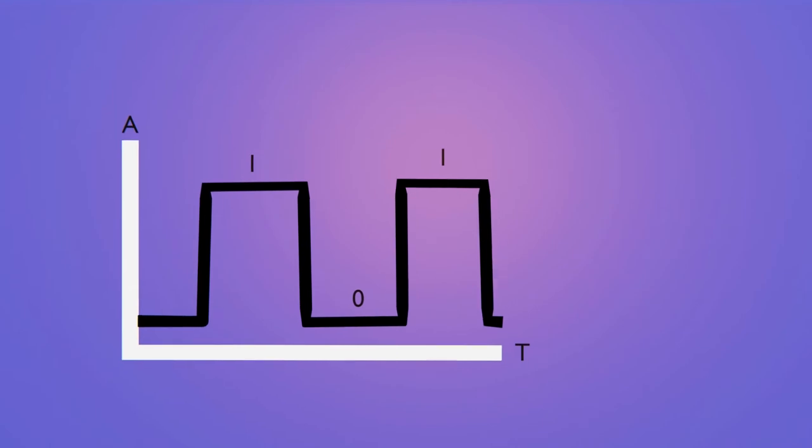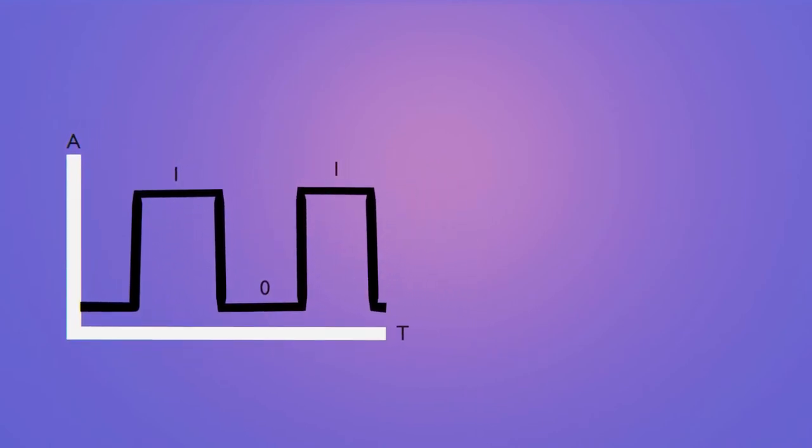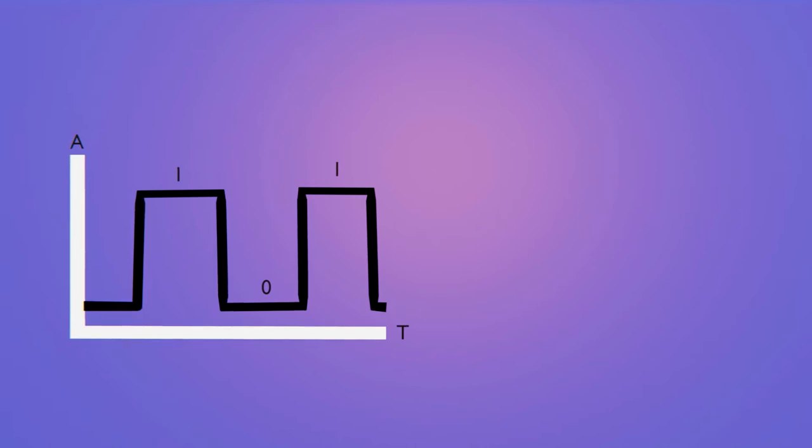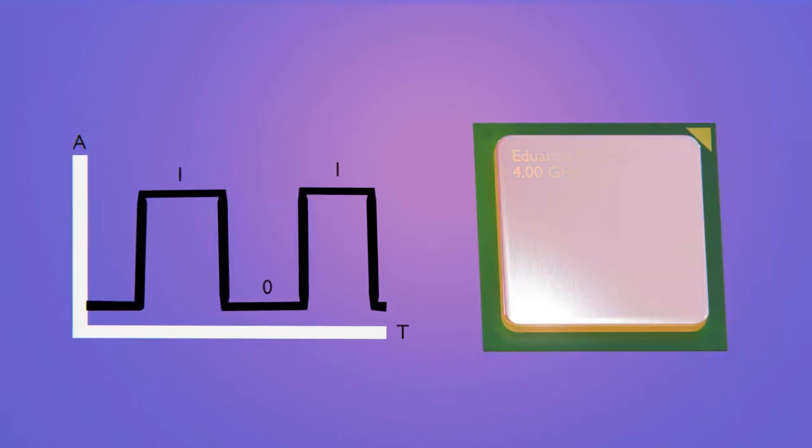The second implication, and perhaps the most problematic one, is that if current is passing through the circuits at all times then again we will find that additional heat will be generated in the processor.